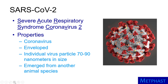SARS-CoV-2 is a coronavirus, a type of virus characterized by the crown-shaped proteins projecting from the surface of the virus envelope. Because SARS-CoV-2 has an envelope, it can be rendered non-infectious by soap and water and other cleaning and disinfection methods. The virus is small, approximately 70 to 90 nanometers wide, nearly 1,000 times smaller than the diameter of an average human hair.